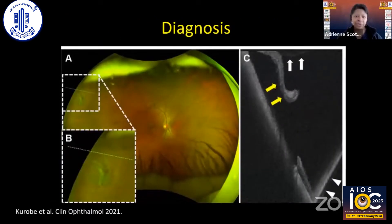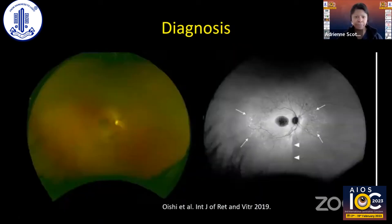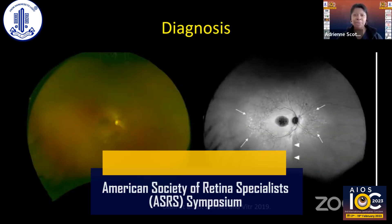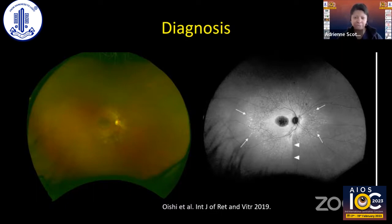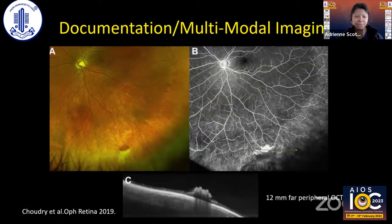Ultra-wide field imaging is also used for diagnosis and documentation of disease processes across a variety of diseases. You can see this beautiful example of multimodal imaging in which Karubi and colleagues documented a peripheral retinal tear with subretinal fluid. Additionally, in diseases we think of as primarily macular, we can get additional information from the periphery. This patient had macular RPE and retinal atrophy, and ultra-wide field fundus autofluorescence highlighted pisciform flecks outside the mid-periphery, confirming Stargardt's disease. Ultra-wide field imaging can also be used in a multimodal and montage fashion to document peripheral neovascularization.